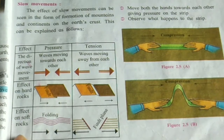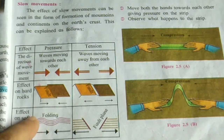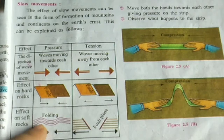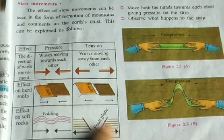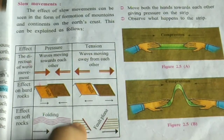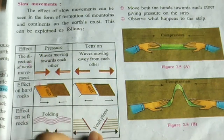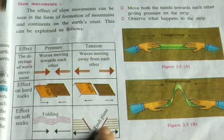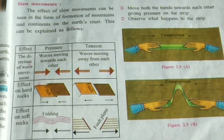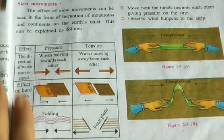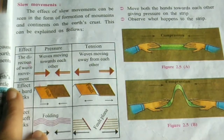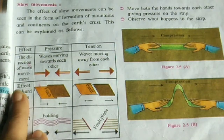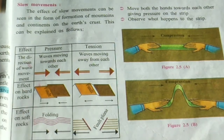The effects on soft earth result in folding. You can see here that folding is created. And there will be a fault plane — there will be a distance between the layers and a fault plane forms. We will study what is faulting, what is folding, what is tension, and what is pressure in this chapter.